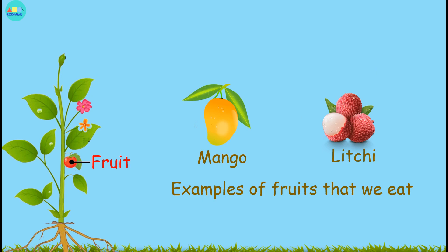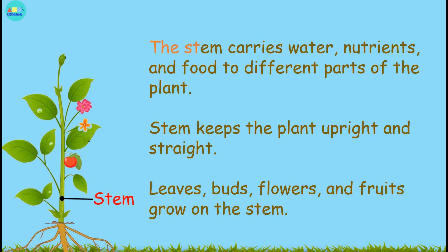Mango and litchi are examples of fruits that we eat. The stem carries water, nutrients, and food to different parts of the plant. It keeps the plant upright and straight.